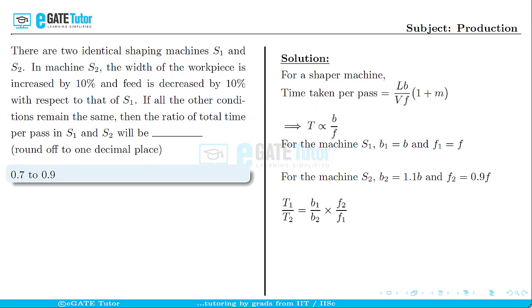From this relation, we can write T1/T2 equals (b1/b2) × (f2/f1). Substituting the corresponding values and simplifying will give us the ratio of total time per pass in S1 and S2 as 0.8.